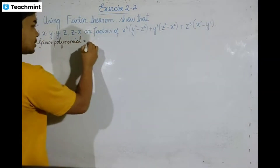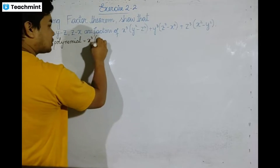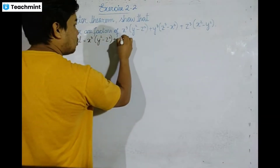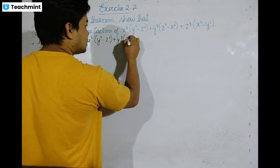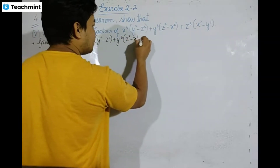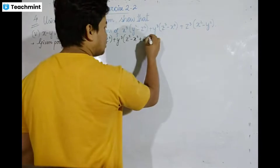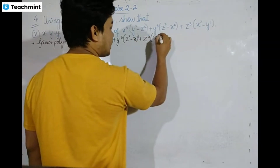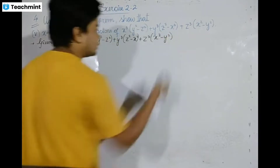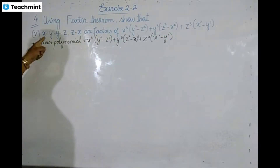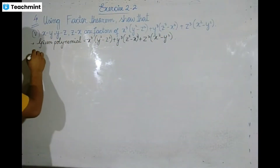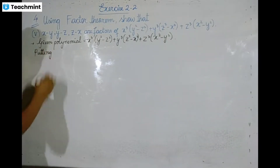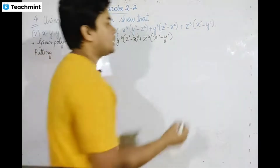This is called prime. We say the given polynomial is: x cubed times (y squared minus z squared), plus y cubed times (z squared minus x squared), plus z cubed times (x squared minus y squared).